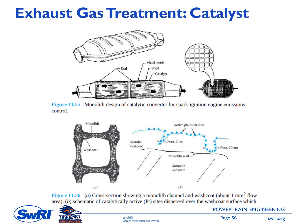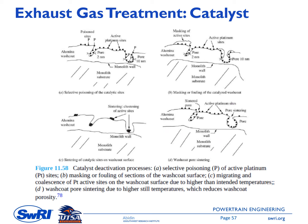On the top feature, we have a monolith design of a catalytic converter for spark ignition engine emissions. On the bottom side, we have a cross-section showing the monolith channel and wash coat. Part B shows a schematic of catalytically active platinum (Pt) sites dispersed over the wash coat surface. A monolith, or honeycomb-like structure, is widely used in automotive applications. While catalysts are not consumed during catalytic reactions, they steadily deactivate with use. The important deactivation modes are poisoning, fouling or masking, and thermal deactivation or sintering.